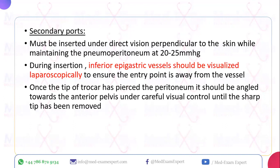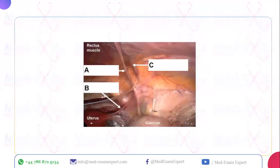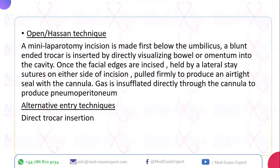Secondary ports must be inserted under direct vision, perpendicular to the skin, with pneumoperitoneum maintained at 20–25 mmHg. Critically, the inferior epigastric vessels must be visualised laparoscopically to ensure the entry point is away from them — they are lateral to the obliterated umbilical vessels. Once the trocar tip has pierced the peritoneum, it should be angled towards the inferior pelvis under careful visual control until the sharp tip is safely inside. The open or Hassan technique involves a mini-laparotomy incision below the umbilicus, blunt trocar insertion under direct vision, and lateral stay sutures on the fascial edges to produce an airtight seal; gas is then insufflated directly through the cannula.